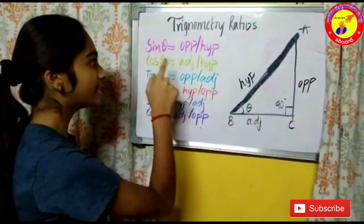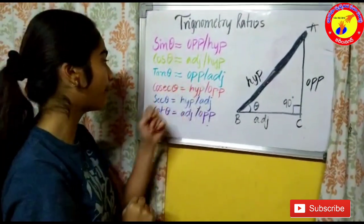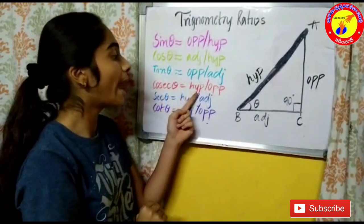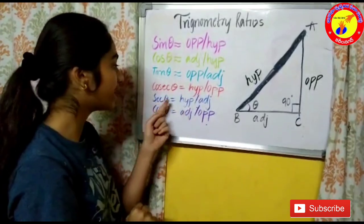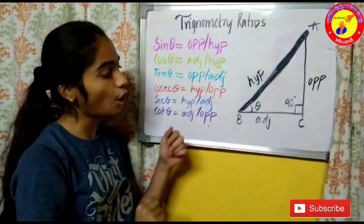So sin theta equals opposite by hypotenuse, and cos theta equals adjacent by hypotenuse. Tan theta equals opposite by adjacent. Cosec theta equals hypotenuse by opposite, sec theta equals hypotenuse by adjacent, and cot theta equals adjacent by opposite.